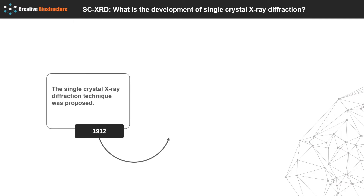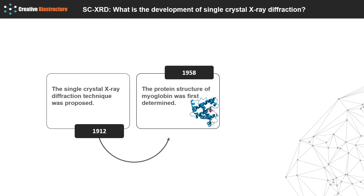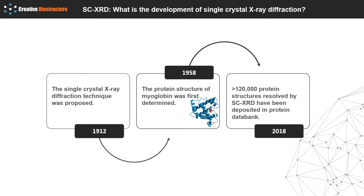The single crystal X-ray diffraction technique was proposed and developed in 1912, and it has become the most important and useful tool for determining protein structure since the protein structure of myoglobin was first determined in 1958. Nowadays, more than 120,000 protein structures resolved by single crystal X-ray diffraction have been deposited in the protein data bank, accounting for nearly 90% of the total, suggesting its advantages in studying the structure of biological macromolecule crystals.